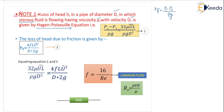There is a loss of head in a pipe of diameter D because of viscosity, which is a property of the fluid. When the fluid is moving with average velocity u bar, the formula is P1-P2 by rho g equal to 32 mu u bar L by rho g D square. This is equation 1, also known as the Hagen-Poiseuille equation.